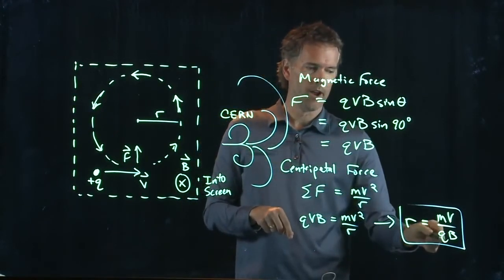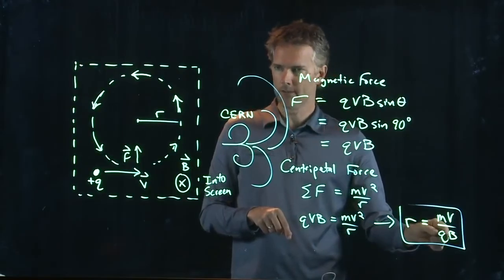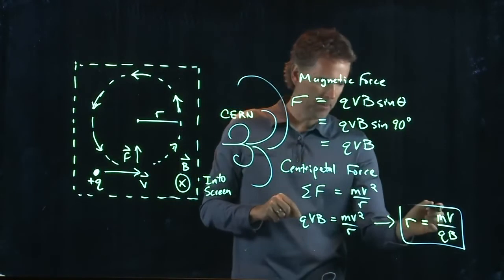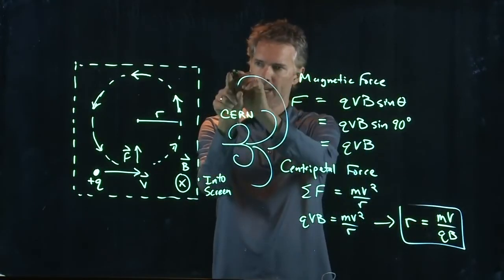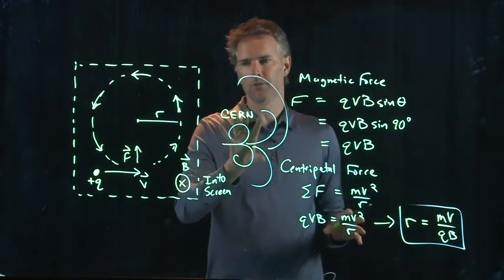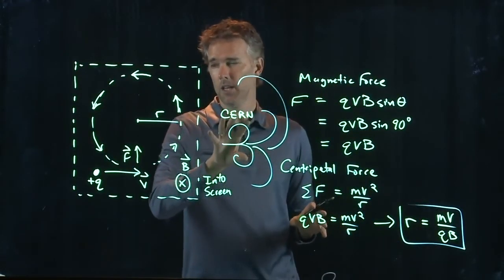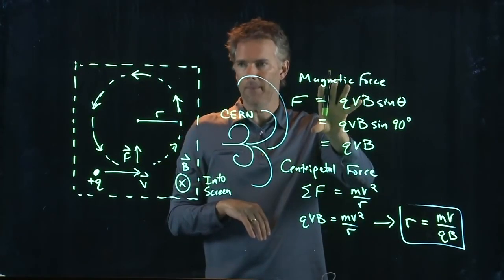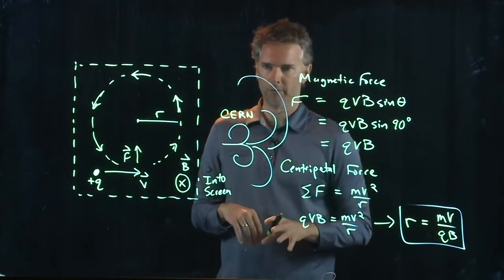Ones that are very lightly charged, have a small Q, have a bigger radius. If they have a bigger mass, they have a bigger radius. Okay? And so, you can determine a lot just from taking these sorts of pictures. And it's really not that complicated, right? We just did it with the force law, magnetic force law, and the centripetal force law.